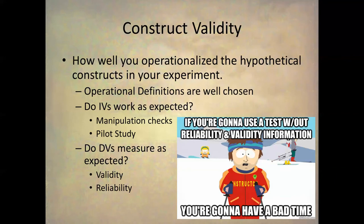First, we have construct validity — how well you operationalize the hypothetical constructs in your experiment. If, for example, aggression was a hypothetical construct used as a dependent variable, you're going to have to have an operational definition of it. How are you going to measure aggression? You might come up with an operational definition of counting the number of aggressive acts on a playground over a 30-minute period. To have good construct validity, you need operational definitions that are well chosen and working well.